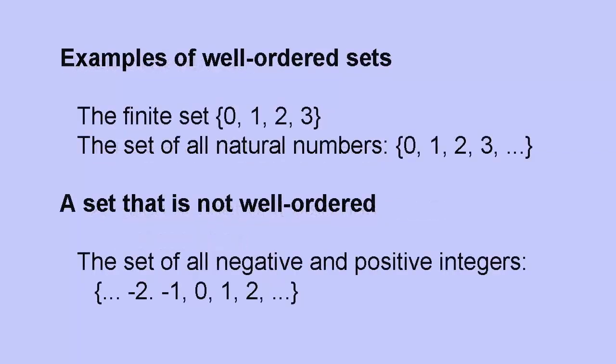The finite set {0, 1, 2, 3}, for instance, is well-ordered. The set of all integers, on the other hand, which includes all negative whole numbers as well as all positive ones, isn't well-ordered because there's no first member. The set of all natural numbers, {0, 1, 2, 3, ...}, is well-ordered because despite having no specified member at the end, it has one at the start, and every subset containing only natural numbers also has a first member.